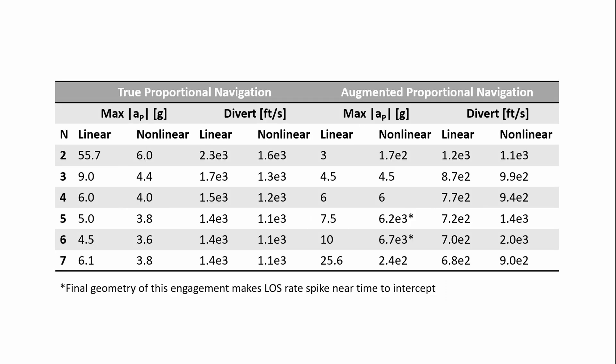This table contains a summary of control effort for both true and augmented proportional navigation. The metrics of interest are max acceleration magnitude and the divert. And we obtain these metrics through numerical integration of the linearized kinematics and the nonlinear kinematics. I'll note that analytical formulas exist for the linearized engagement. However, here we're using numerical integration to obtain our results. Our navigation gain varies from 2 to 7.